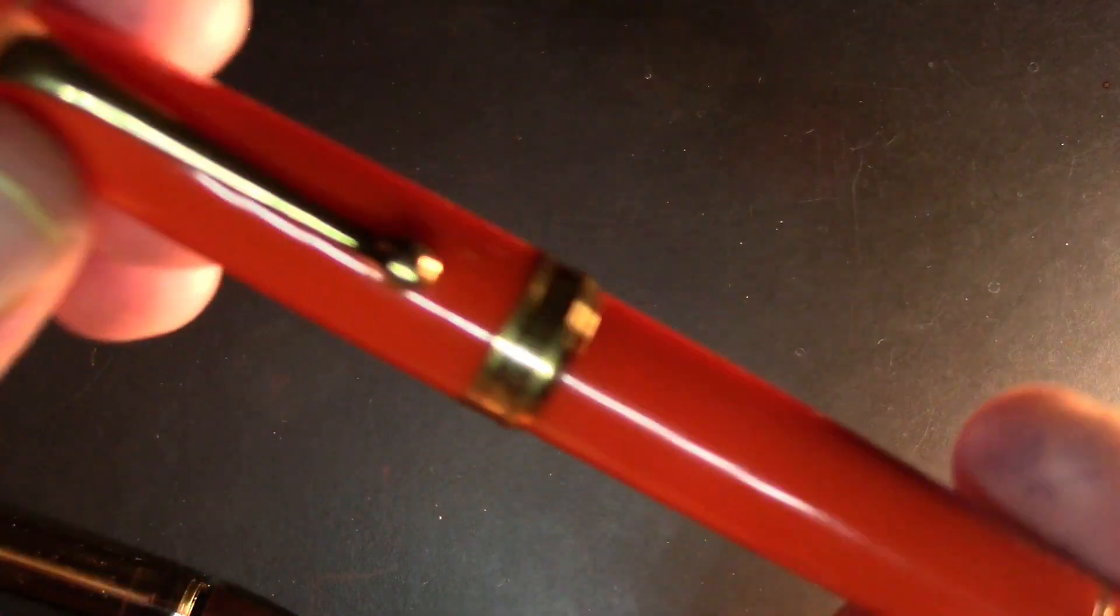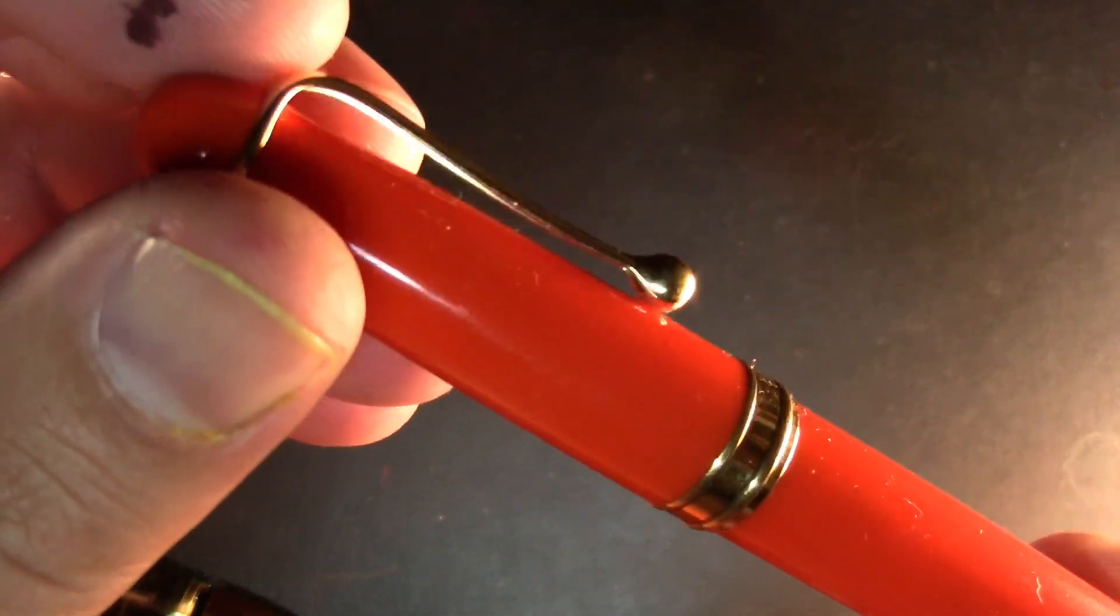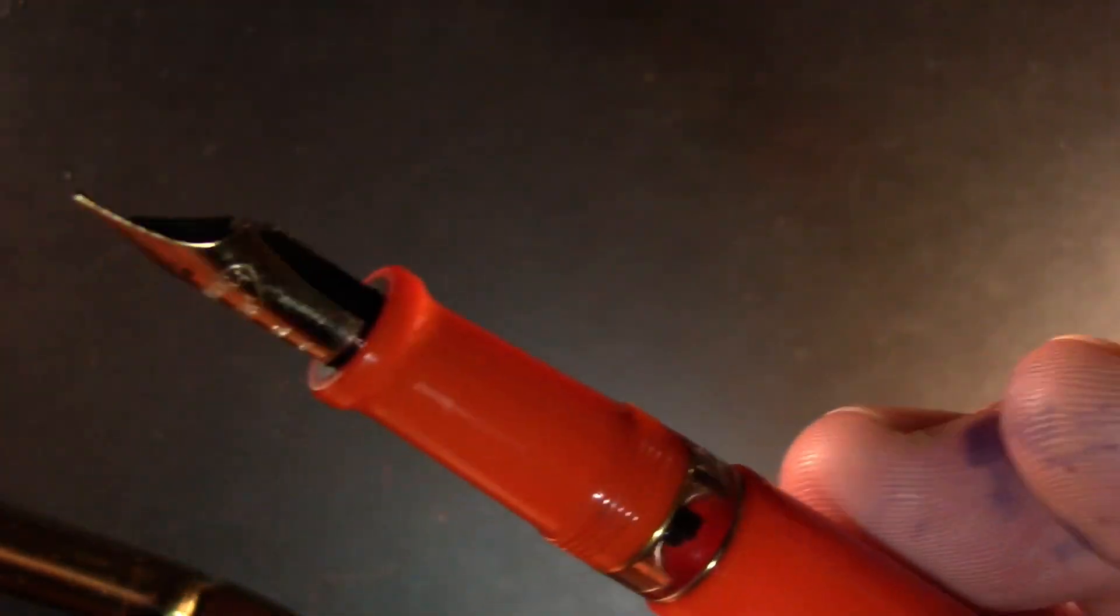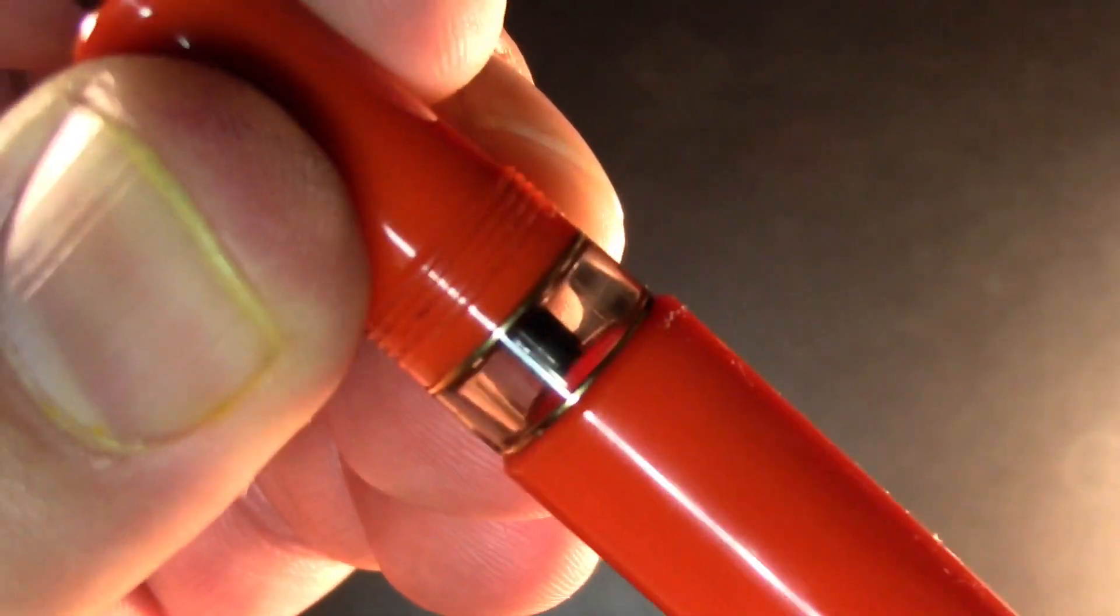The Aurora 88 has a similar cigar-shaped body, ball-shaped clip, but a little different. Open it up, it's a piston filler. We'll screw it down here just so you can see it, a little more traditional and easy to understand.